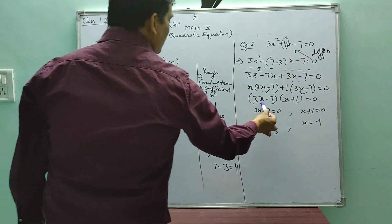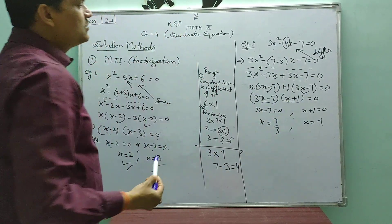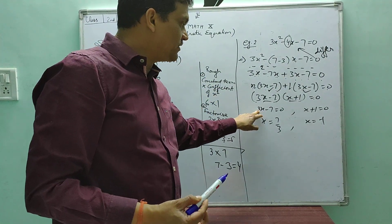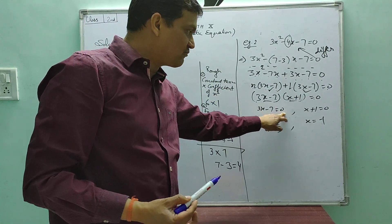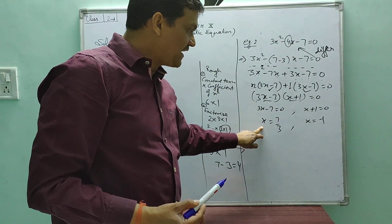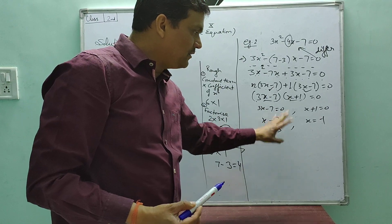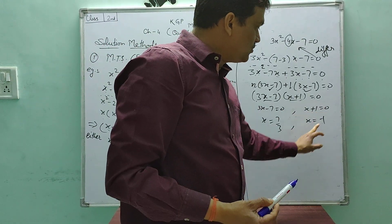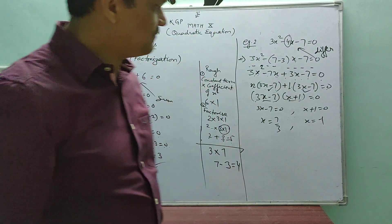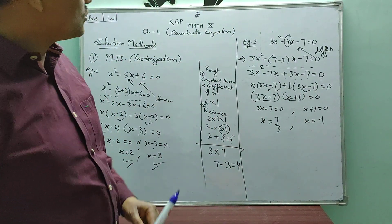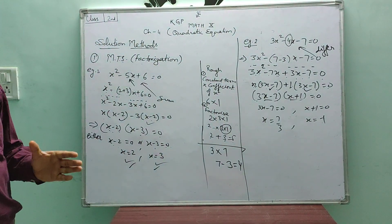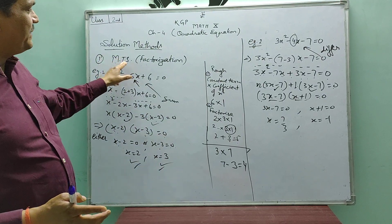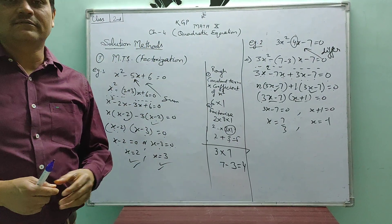Either this bracket is 0 or this bracket is 0. Setting them separately equal to zero: 3x minus 7 equals 0 gives x equals 7 over 3. From x plus 1 equals 0, x equals minus 1. So friends, I hope that you have clearly understood the MTS method of solving quadratic equations.